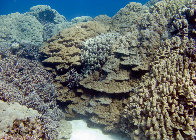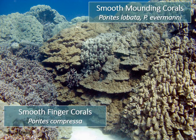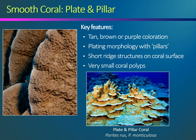Can you recognize the coral types in this image? Both smooth mounding and smooth finger coral types are inhabiting this reef at Hononau on the Big Island.